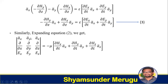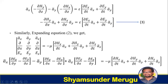Similarly, expanding equation 2, we get the determinant form again. The first row takes ax bar, ay bar, az bar. The second row takes partial over partial x, partial over partial y, partial over partial z. The third row takes Ex, Ey, Ez. This equals minus mu times (partial Hx over partial t ax bar plus partial Hy over partial t ay bar plus partial Hz over partial t az bar). Expanding: ax bar of (partial Ez over partial y minus partial Ey over partial z) minus ay bar of (partial Ez over partial x minus partial Ex over partial z) plus az bar of (partial Ey over partial x minus partial Ex over partial y), equal to minus mu times (partial Hx over partial t ax bar plus partial Hy over partial t ay bar plus partial Hz over partial t az bar).